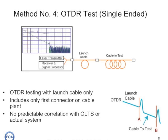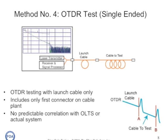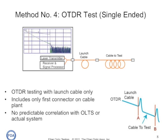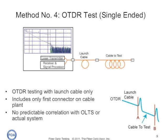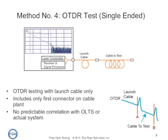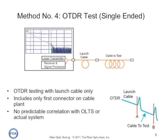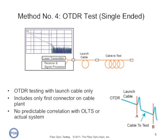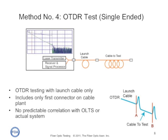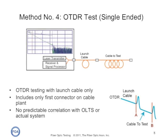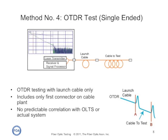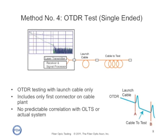The next two methods use OTDRs. OTDRs don't test like the system uses the cable plant, or like an insertion loss test. They use backscattered light to take a snapshot of the cable plant and calculate a projected loss value for the cable. The traditional method uses a launch cable — which also allows the OTDR measurement to settle down before testing — connected to the cable plant under test. The OTDR then calculates the loss of the connection from the launch cable to the cable plant, and the entire length of the cable plant, less the far-end connection, which is open and not connected to anything.